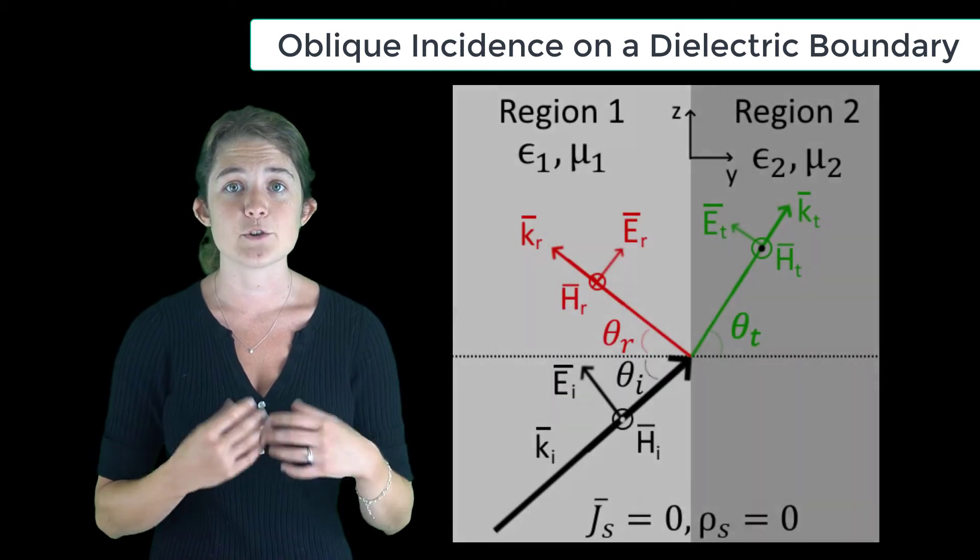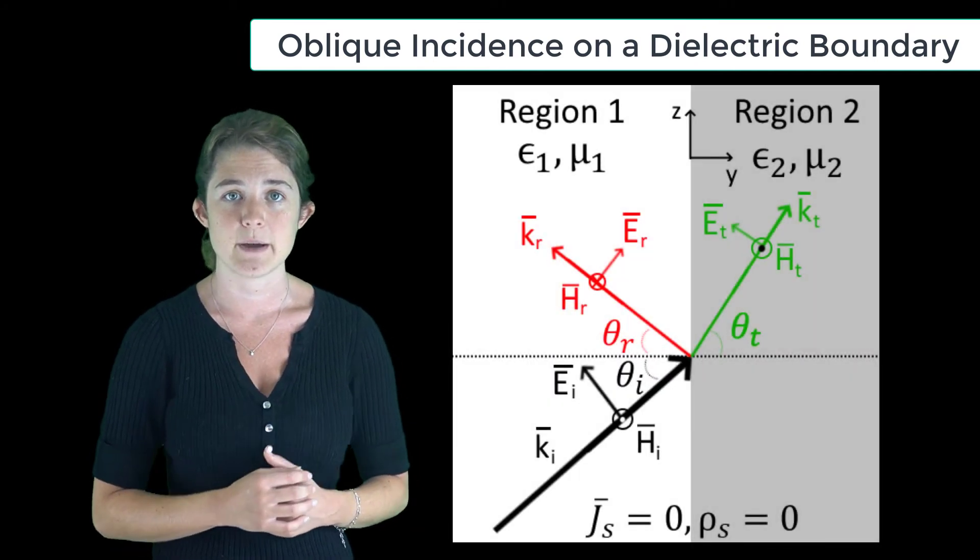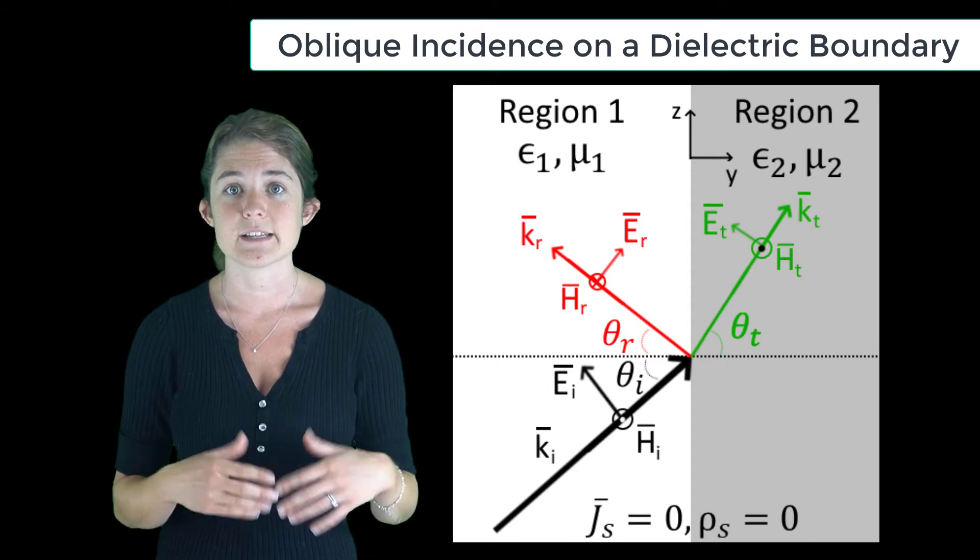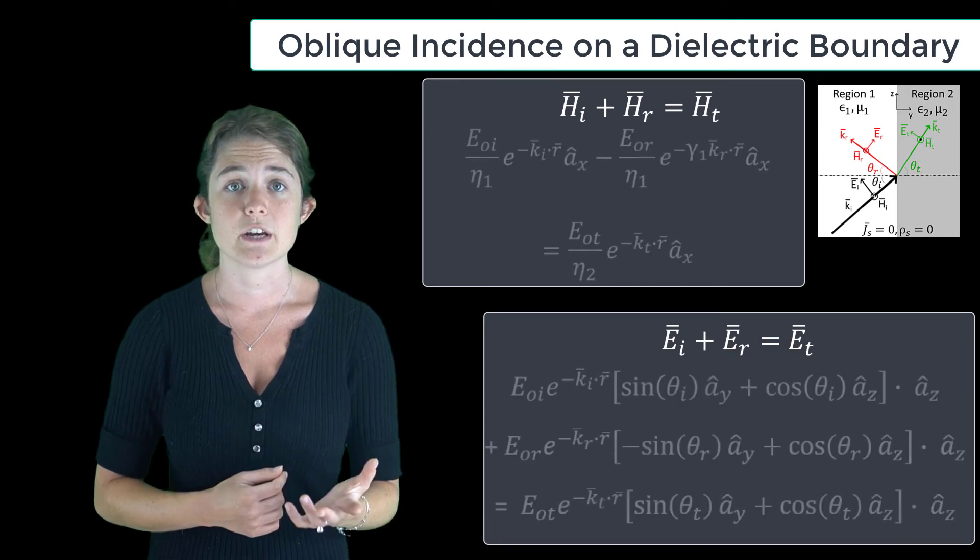The third case is oblique incidence where the magnetic field is oriented perfectly tangential to the boundary. This follows exactly the same process as the previous case. In this case, we write the boundary conditions using trigonometry.